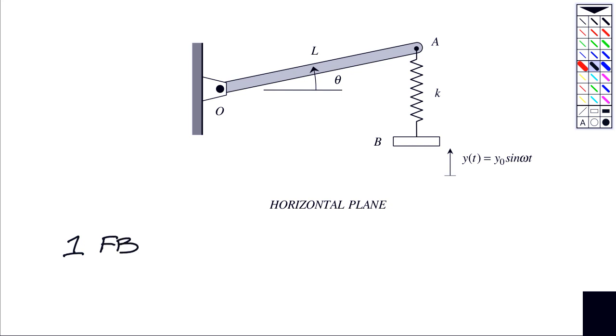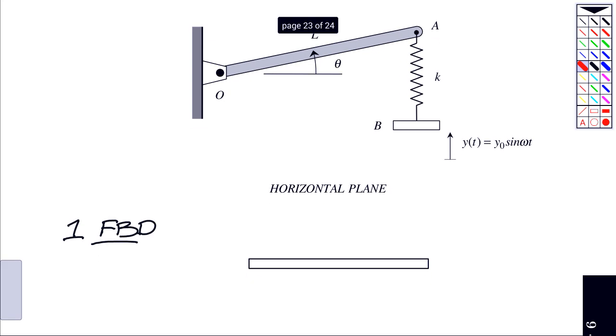So if I look at the forces that are acting on the bar, the forces that I see here are the reactions at O. So this is going to be Ox and Oy. It says that it's in the horizontal plane, so that means there's no weight that comes into play. Weight is perpendicular to the screen.